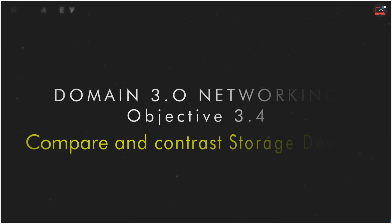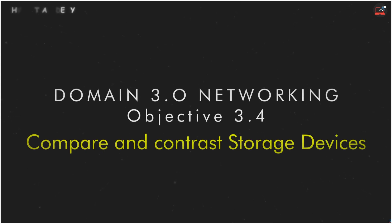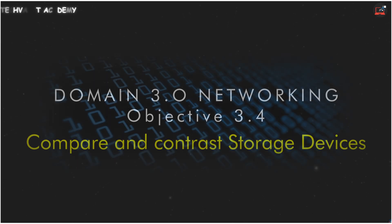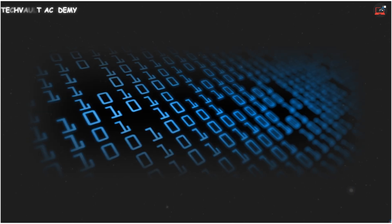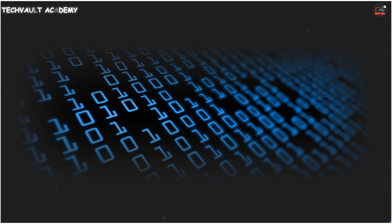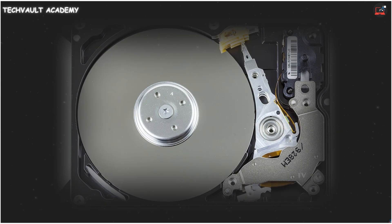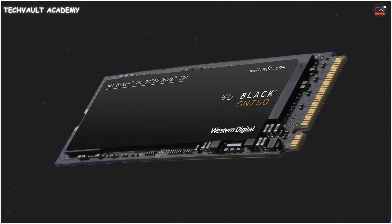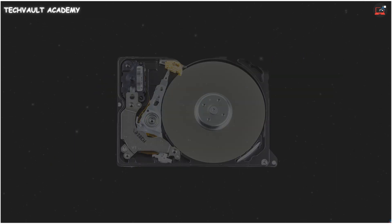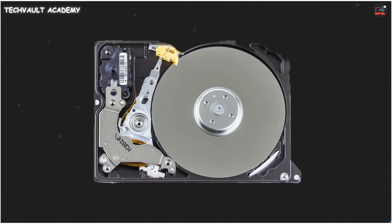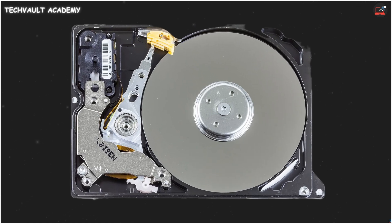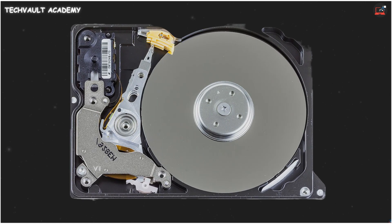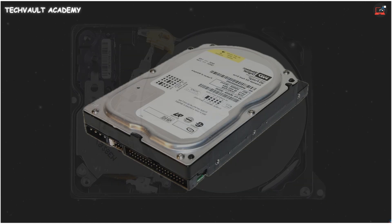We're diving into Objective 3.4 to compare and contrast storage devices. This is all about where your data lives, from the old spinning platters to lightning-fast flash memory. Let's start with the classic hard drives, or HDDs.